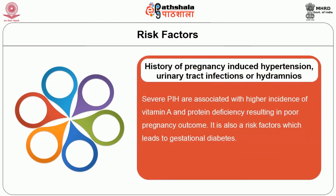Another risk factor is the history of pregnancy-induced hypertension, urinary tract infections, or hydramnios. Severe pregnancy-induced hypertension or PIH is associated with higher incidence of vitamin A and protein deficiency, resulting in poor pregnancy outcomes. This is also a strong risk factor which leads to gestational diabetes.